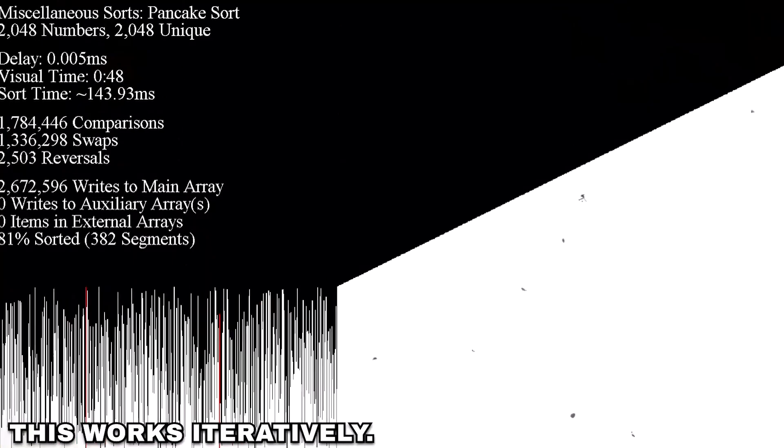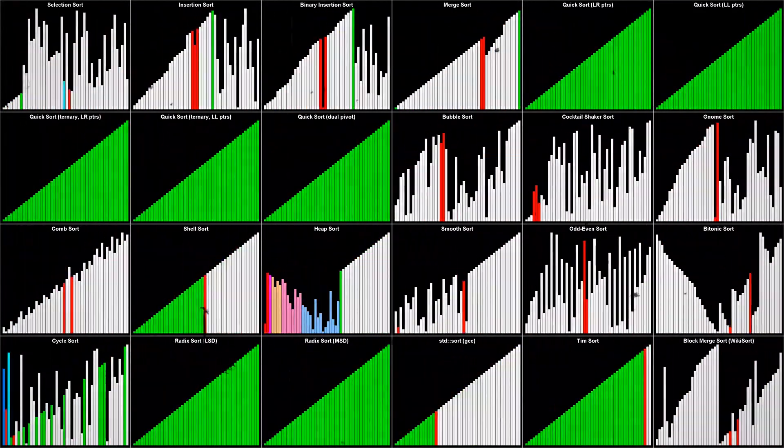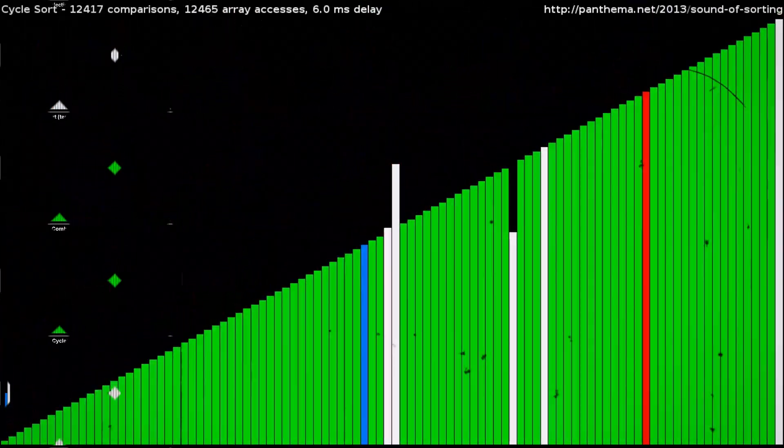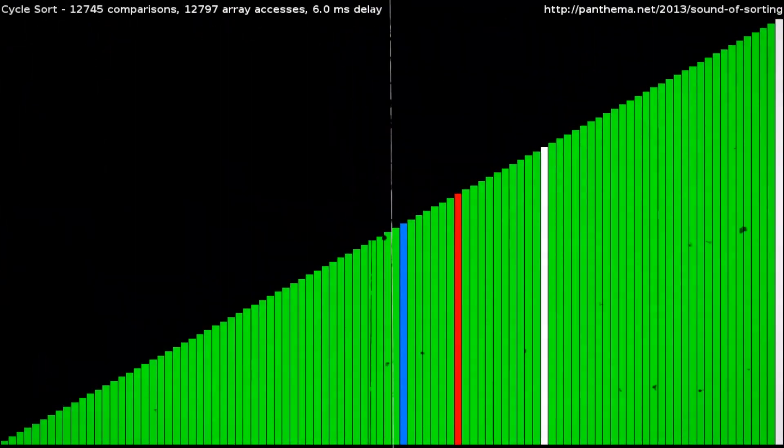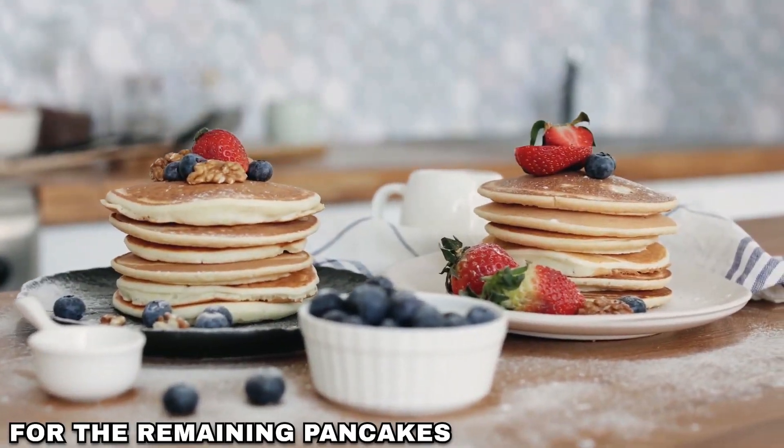This works iteratively. At each iteration, it detects the largest pancake yet to be sorted and performs a flipping operation to bring it to the top of the stack. After a series of such operations, the largest pancake ends up at the bottom of the stack. Then the process is repeated for the remaining pancakes.